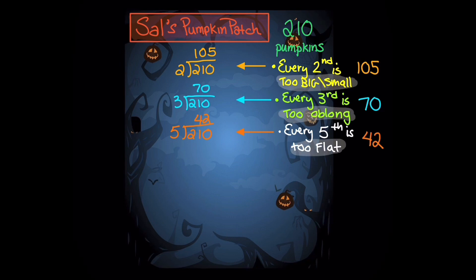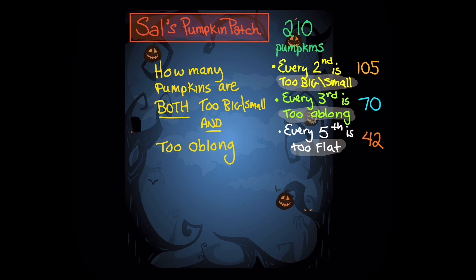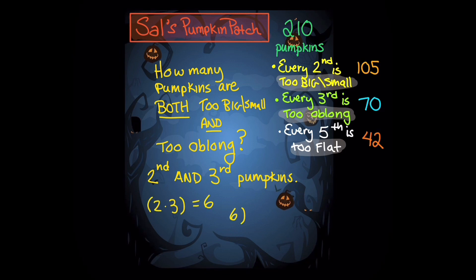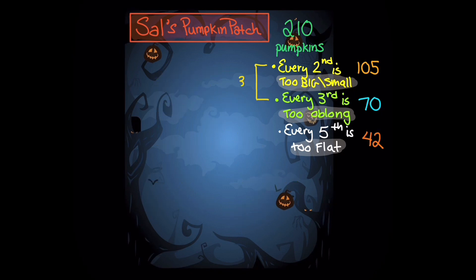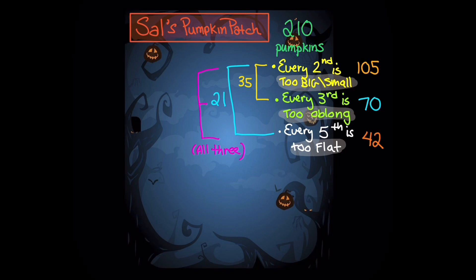But now we must consider that there is some overlap — some pumpkins that are both too big or small as well as too oblong. So we count how many pumpkins are both every second and third pumpkin. 2 times 3 gives us 6, and dividing 210 by 6 gives us 35 pumpkins. Too big or small and too flat would be every second and fifth pumpkin: 2 times 5 is 10, and 210 divided by 10 gives us 21. If we consider all three characteristics, 2 times 3 times 5 gives us 30, and 210 divided by 30 is 7 pumpkins having all three characteristics.